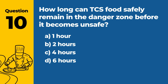Question 10. How long can TCS food safely remain in the danger zone before it becomes unsafe? The answer is B: 2 hours. Food should not be in the danger zone for more than 2 hours to prevent bacterial growth.